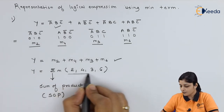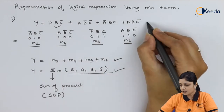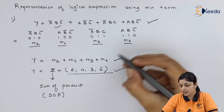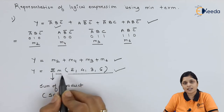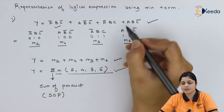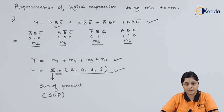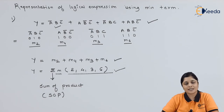In this way you represent the final answer considering the minterms. The representation should be written as: summation m, then inside the bracket write down all the bases present in the expression. The summation sign represents sum of products, small m represents minterms, and 2, 4, 3, 6 are the bases for the minterms — the terms present in the logical expression.